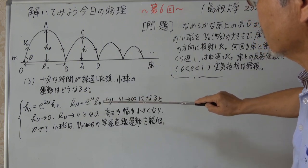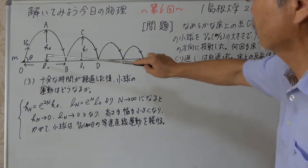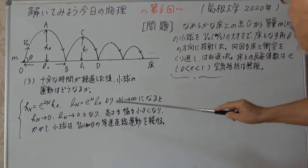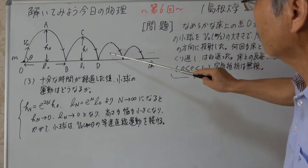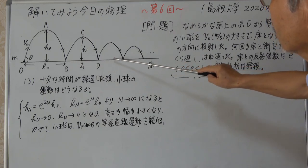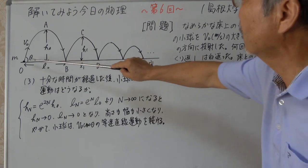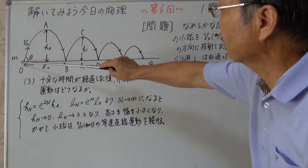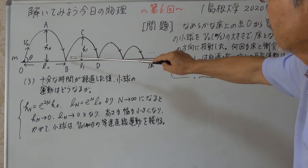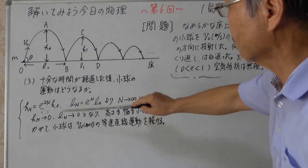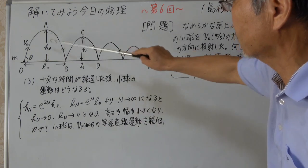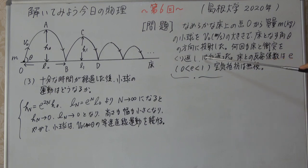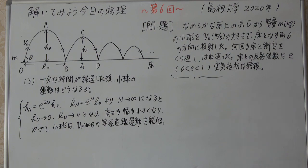3番、十分な時間が経過した後、小球の運動はどうなるか。Hnはどんどん0に近づき高さが0になります。LnもどんどんどんどんNが無限大になると0に近づきます。しかし水平方向の速度V0cosθは摩擦が無いので変わりません。最終的にはV0cosθで等速直線運動を続けることになります。